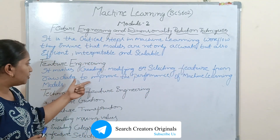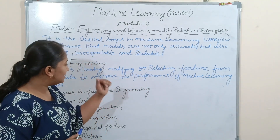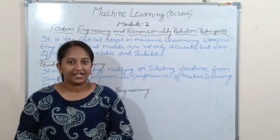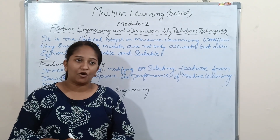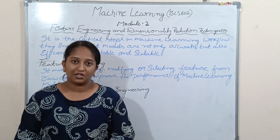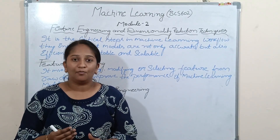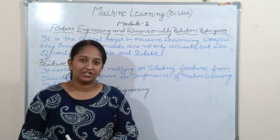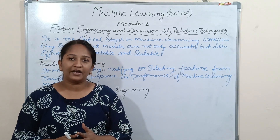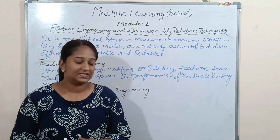Feature engineering involves creating, modifying, or selecting features from raw data to improve the performance of machine learning models. Feature engineering means modifying or creating new features from the raw data to make the models more efficient in machine learning, which means cleaning or enhancing the data for better performance.